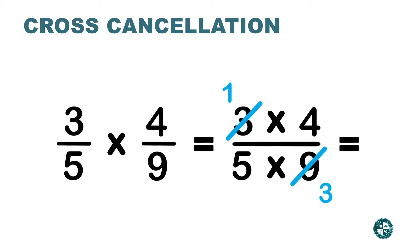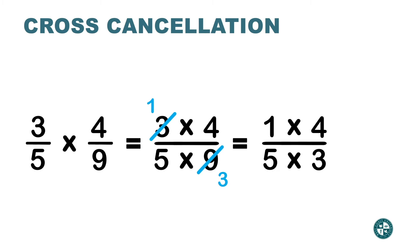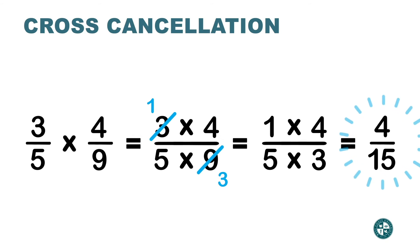Check between 4 and 5 — the only number that can divide both is 1, so we don't do anything to those two. Now multiply 1 times 4 to get 4, and 5 times 3 to get 15. I don't need to check again because I already simplified before multiplying.